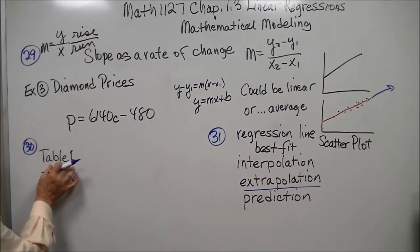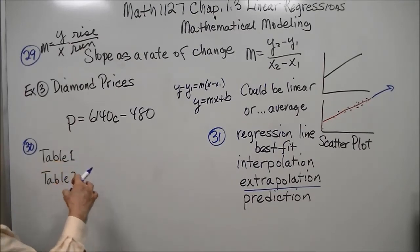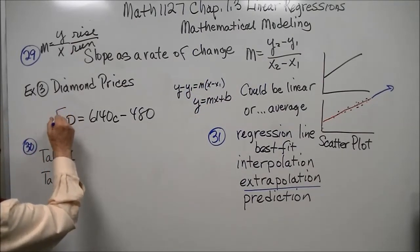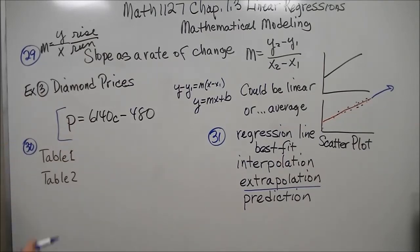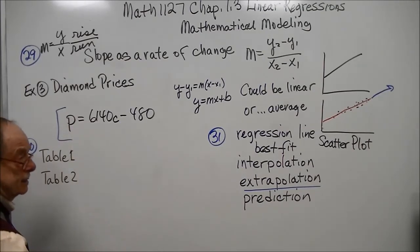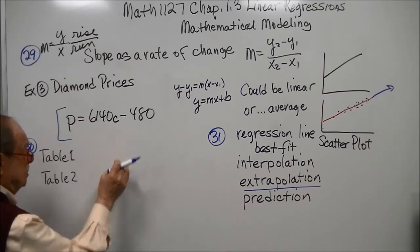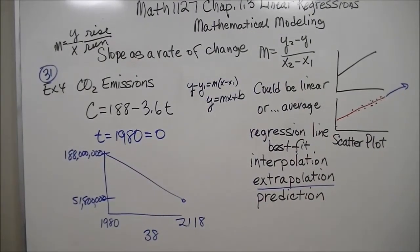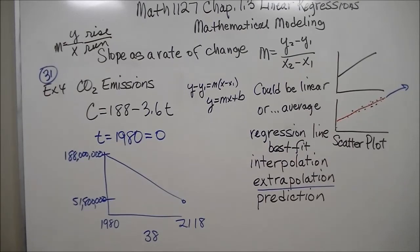For table one, after they take some data, put it into the slope form, then into point-slope, you end up with this is the equation for the price of a diamond, which is a certain weight of carat. Whatever the diamond weighs, the smaller, the price will be less. The larger, the price will be more. Table two is just a different type of diamond, and it does basically the same thing.